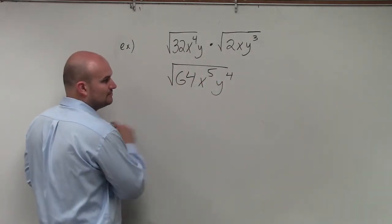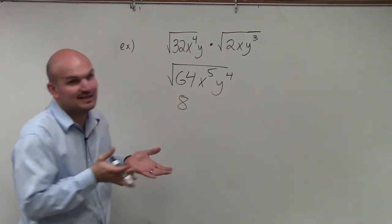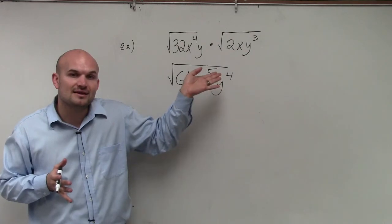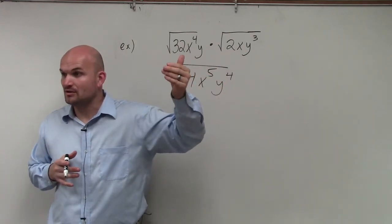So do we know the square root of 64? 8. And can I simplify? I can't take the square root of x to the fifth, but I can take the square root of x squared. Right? Correct?